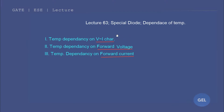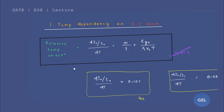Hi, welcome to GEL, Gate ESE Lecture. This is lecture number 63 of EDC, the third module on special diodes, covering the dependency of temperature on V-I characteristics, forward voltage, and forward current. In this lecture video, I am going to give you a couple of formulas. The derivation of these formulas will be uploaded later because those derivations have nothing to do with your GATE exam, but the expressions are extremely important. Let's start with temperature dependency on V-I characteristics.